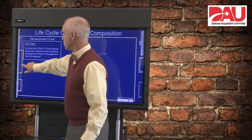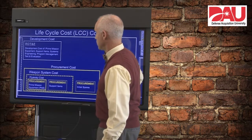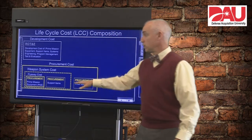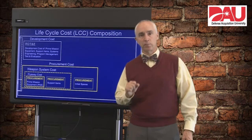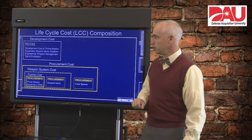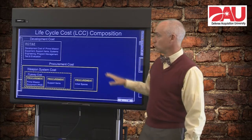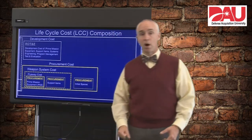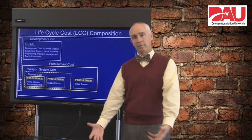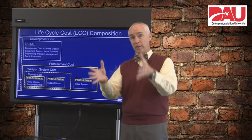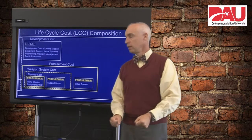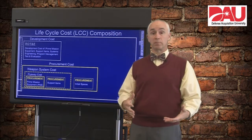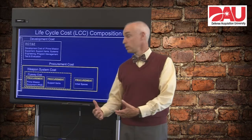We also have costs to produce a system, and those come in some different categories. Each of these is one appropriation — procurement, shown in yellow here. So the total procurement cost we can break up into different categories. The flyaway cost is just the cost of the prime mission equipment — that aircraft sitting there on the tarmac. That's what we call flyaway cost. Then you also have to have support items, so to get the weapon system cost, you add the support item cost to the flyaway cost.